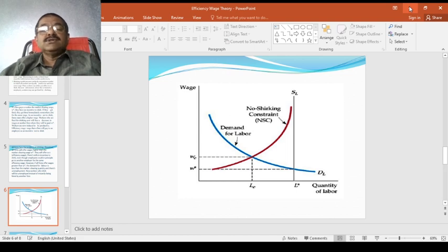This is the no-shirking constraint curve. The no-shirking constraint curve shows the minimum wage for each level of unemployment. This curve indicates the minimum wage at each level of employment that workers must earn in order not to shirk. The greater the level of unemployment, the smaller the difference between WE and W*. With high levels of unemployment, people who shirk risk longer periods of unemployment and therefore accept lower wages.